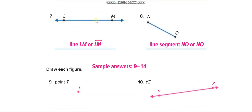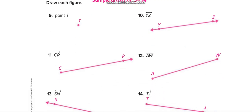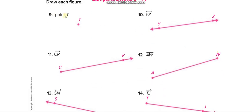Two arrows extending both sides — Line LM, or written this way. No arrows — Line Segment NO, or NO with a small line segment above it. Now they give you names and you have to draw the figure. The first one says Point T, so you draw a dot and label it T.